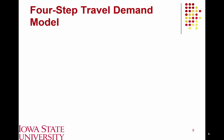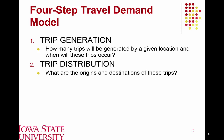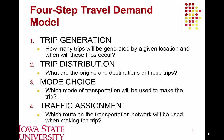The four steps in the travel demand model are: trip generation, where we estimate how many trips are starting or ending at a given location and when during the day they occur; trip distribution, where we determine the origins and destinations of those trips; mode choice, whether a person is driving or taking a transit option; and traffic assignment, determining which of several potential routes would be used to travel from point A to point B.